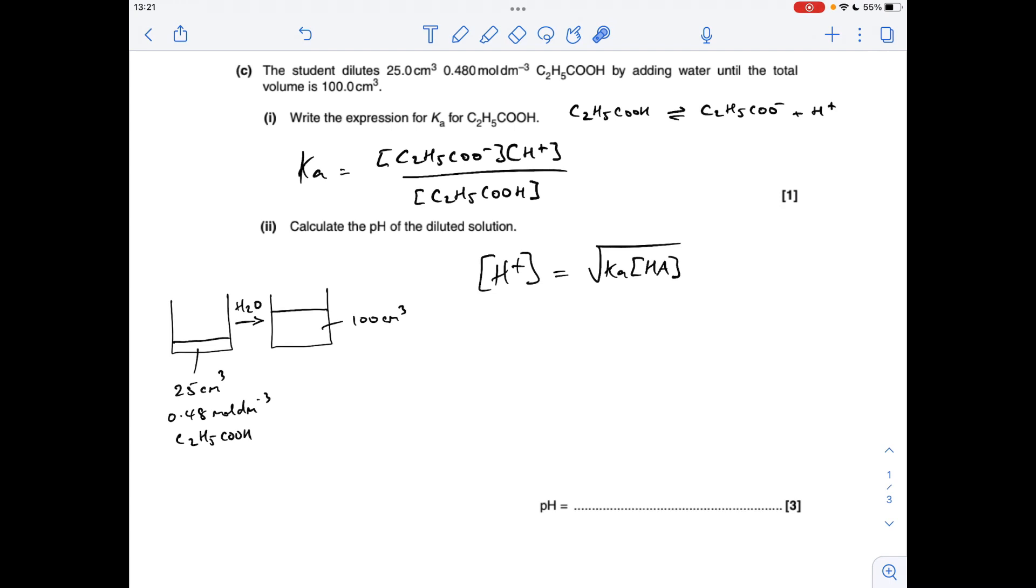Propanoic acid is a weak acid, so we use this expression here. H+ concentration of a weak acid is the square root of Ka times HA. That's what I call it. So what do we know? We know the Ka value, but we don't know the concentration of the acid once it's been diluted. That's what we've got to calculate first.